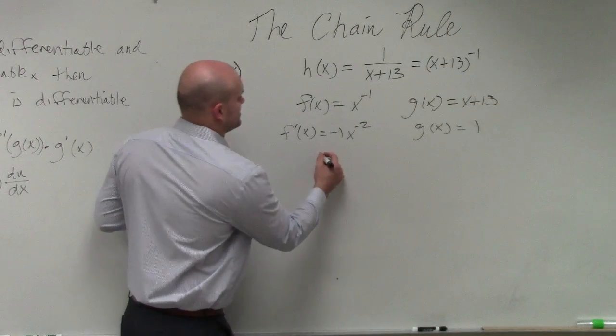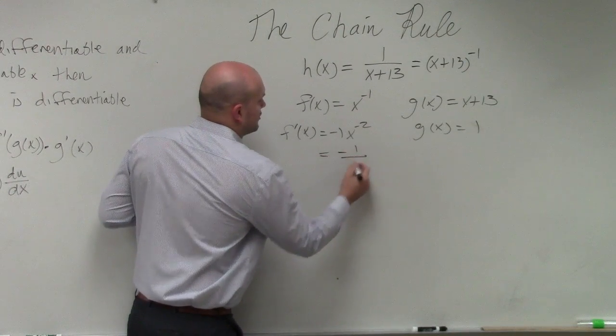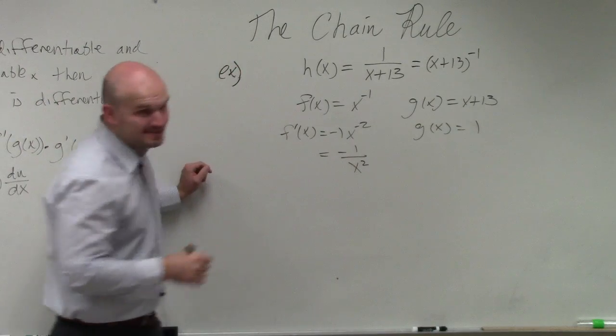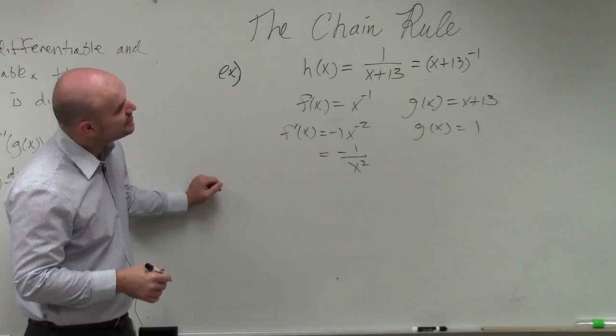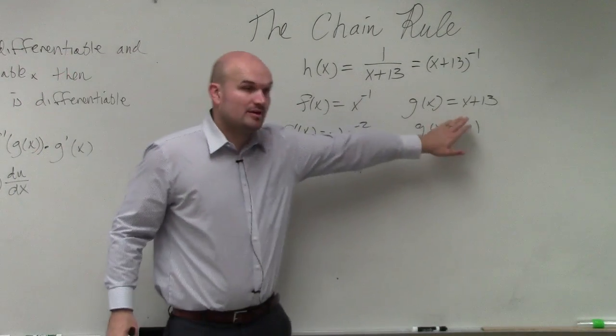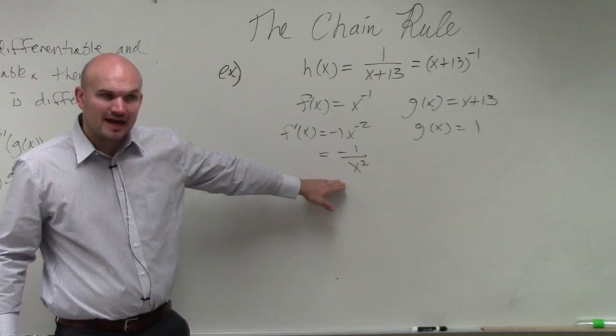And obviously, we can rewrite this as negative 1 over x squared. That's important because now when I plug in doing the chain rule, I'm going to plug in my g of x into f prime.